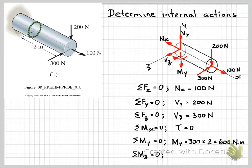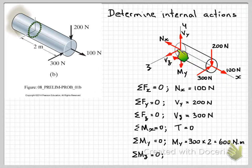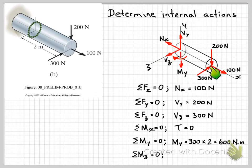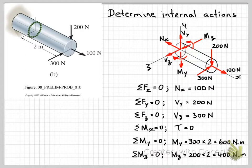Now let's look at moments about the z axis. Which forces are causing a moment about the z axis? The force in the x direction passes through the z axis, so that has no moment effect. The 300 Newton force in the z direction is parallel to the z axis, so that will have no moment effect. All we're left with is the 200 Newton vertical force at a distance of 2 metres, perpendicular to the z axis. We can draw in our internal reaction moment and write the equation to calculate that internal moment about the z axis: Mz equals 200 times 2, giving 400 Nm.